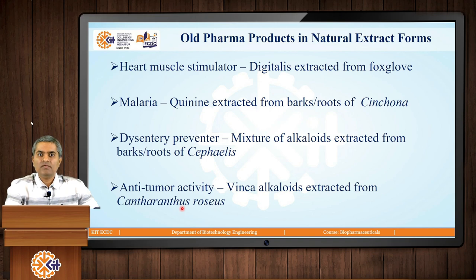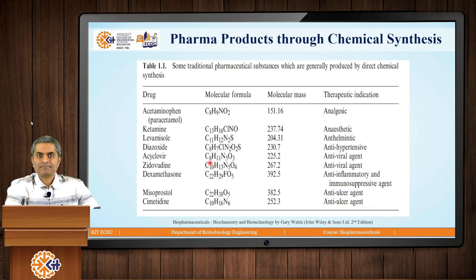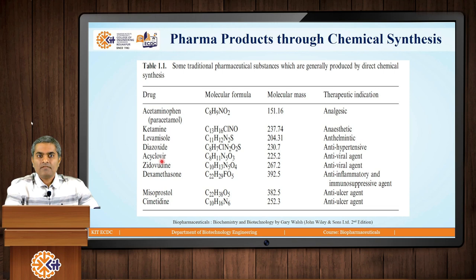Previously, these extracts used to be effective against these different ailments. But as the pharmaceutical industry grew, they started isolating the active principles which are working against some diseased condition. These active principles are called the Active Pharmaceutical Ingredient, or API. These are few traditional pharmaceutical substances which pharma industries started producing by direct chemical synthesis. The very popular one is paracetamol, which is an analgesic acting as an antipyretic agent. There are others like acyclovir, which is an antiviral agent, and cimetidine, which is an anti-ulcer agent. All these kinds of drugs are chemically synthesized in pharmaceutical industries — we can also call it an organic synthesis mechanism.